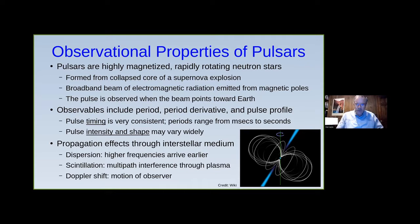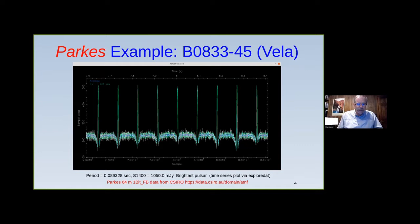Here's a beautiful example from the Parkes 64-meter dish in Australia. Their science data is freely available after an 18-month embargo. I found some of their one-bit analog filter bank data — they discovered hundreds of new pulsars with it. In this case, this is Vela: a beautiful example of very clean data with a very strong pulse. The pulse period is about 0.9 seconds, and you can see it repeating every nine-tenths of a second. This is the brightest pulsar.